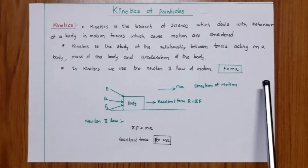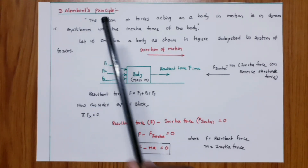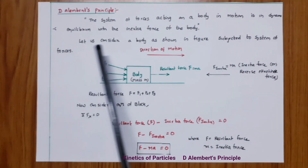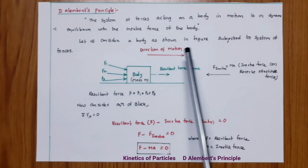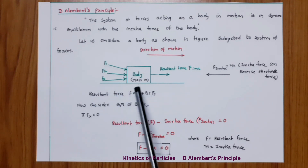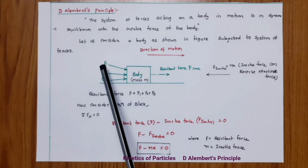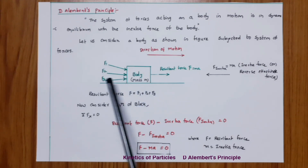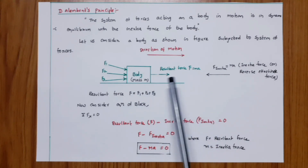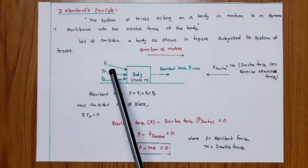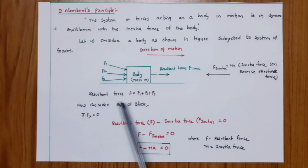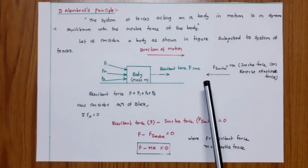D'Alembert's principle: the system of forces acting on a body in motion is in dynamic equilibrium with the inertia force of the body. Consider a body of mass m subjected to a system of forces F1, F2, and F3. The body tends to move in this direction and the resultant force acts in this direction. The resultant force produces the same effect as all three forces F1, F2, and F3. From Newton's second law, F equals ma.